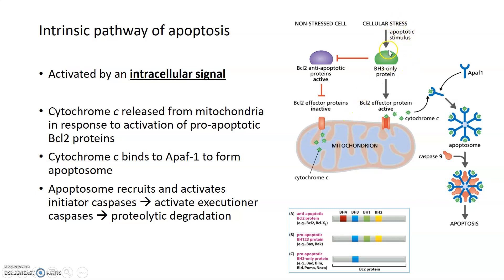When an apoptotic stimulus is received from inside the cell — such as DNA damage that's beyond repair — it activates BH3-only proteins. These inhibit BCL2, stopping its inhibition on channel formation in the mitochondria. The effector proteins that BCL2 was inhibiting then become active, come together, form a channel, and allow the release of cytochrome c from the inner mitochondrial membrane out into the cytosol. Cytochrome c should not be in the cytosol, because when it is, it binds to Apaf-1 and forms a structure called the apoptosome, which recruits initiator caspases and starts the caspase cascade leading to apoptosis.